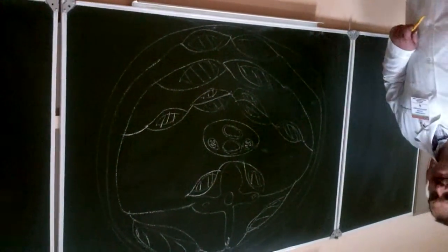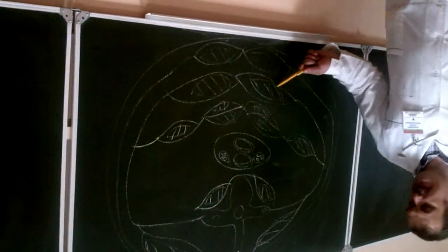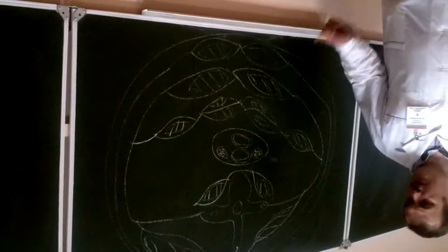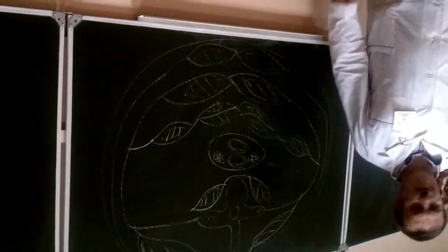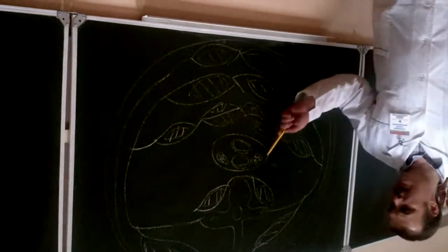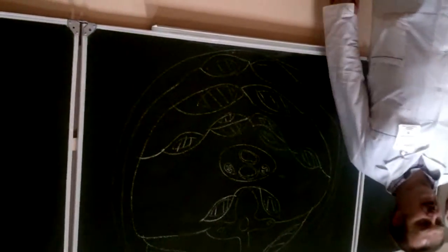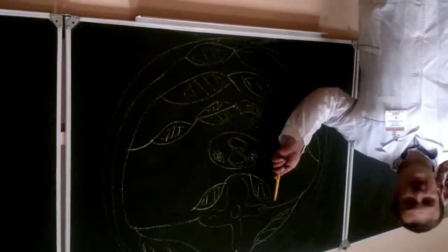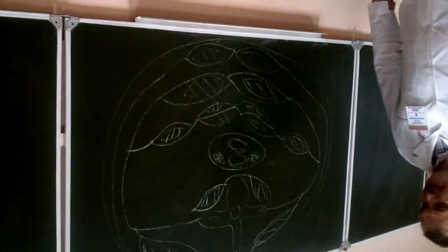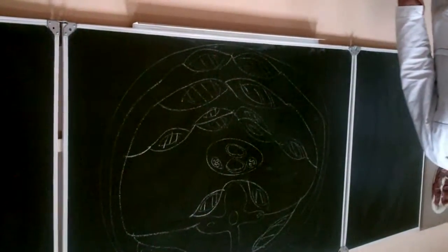That is the fifth fascia. First — fascia coli superficialis. Second — lamina superficialis of fascia coli propria. Third — lamina profunda of fascia coli propria. Fourth — fascia endocervicalis, which has parietal and visceral layers. And fifth — fascia prevertebralis. It is also necessary to know the spaces between these fasciae.